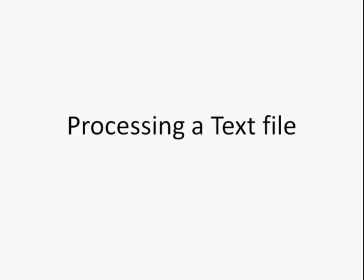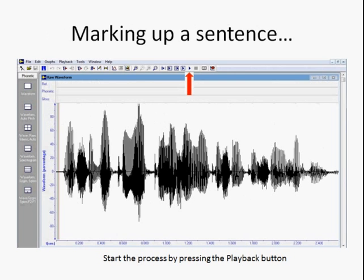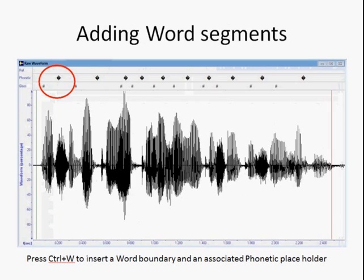For processing a text file, assuming the recording is a story, some discussion of idiomatic expressions, sentences, or phrases, the way to mark up that recording is to simply press the playback button and, as time passes, use Ctrl-W to insert a boundary. Every time a boundary is noticed, the start cursor can be moved to that location and Ctrl-W can be pressed. As time goes on, more and more words are marked, with the phonetic elements marked automatically above.